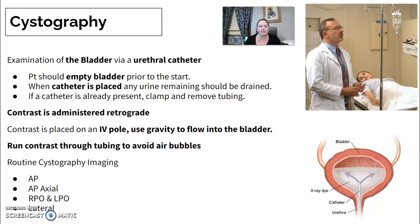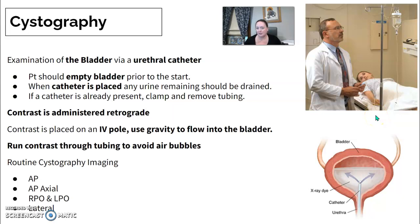Try to keep your sterile technique. The contrast is going to be administered retrograde, usually using gravity, so your contrast bottle will hang on the IV pole. You'll have some extension tubing connected up into the catheter — usually you need one of those clear Christmas trees. Run the contrast through the tubing first to prevent any air bubbles from appearing on your image in the bladder before you connect to the catheter.